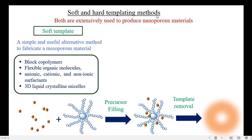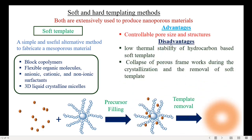The next technique is soft and hard templating methods. Both are greatly used to produce nanoporous materials. The soft template method is a simple and alternative useful method to fabricate mesoporous materials. The template materials used are block copolymers, flexible organic molecules, anionic, cationic, and non-ionic surfactants, and 3D liquid crystalline micelles. The figure demonstrates the dispersion of precursor materials into the template matrix and the structure of nanomaterials formed after template removal. The significant advantage is controllable pore size and structures. However, it has disadvantages such as low thermal stability of hydrocarbon-based soft templates and collapse of porous frameworks during crystallization and removal of the soft template.